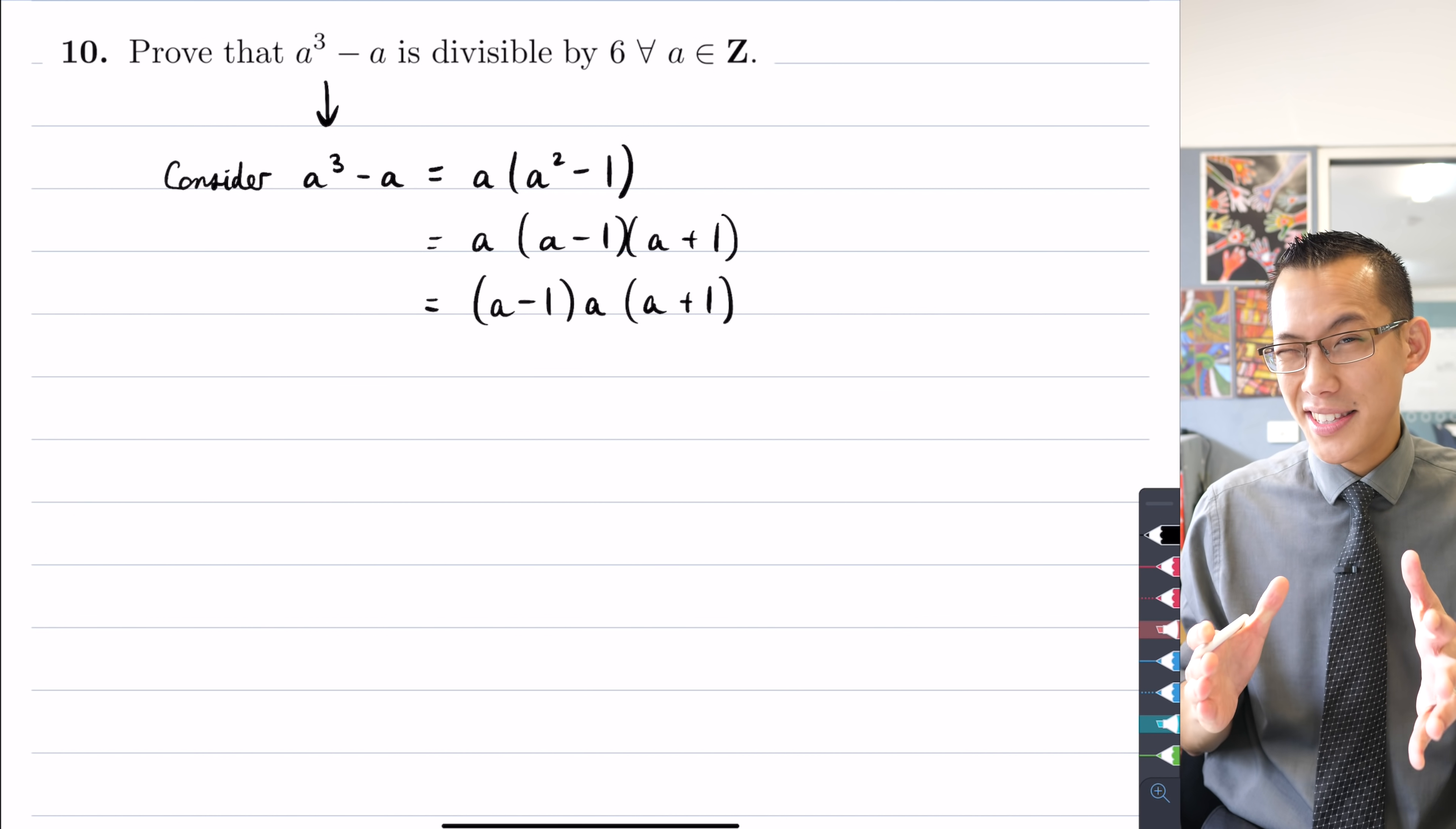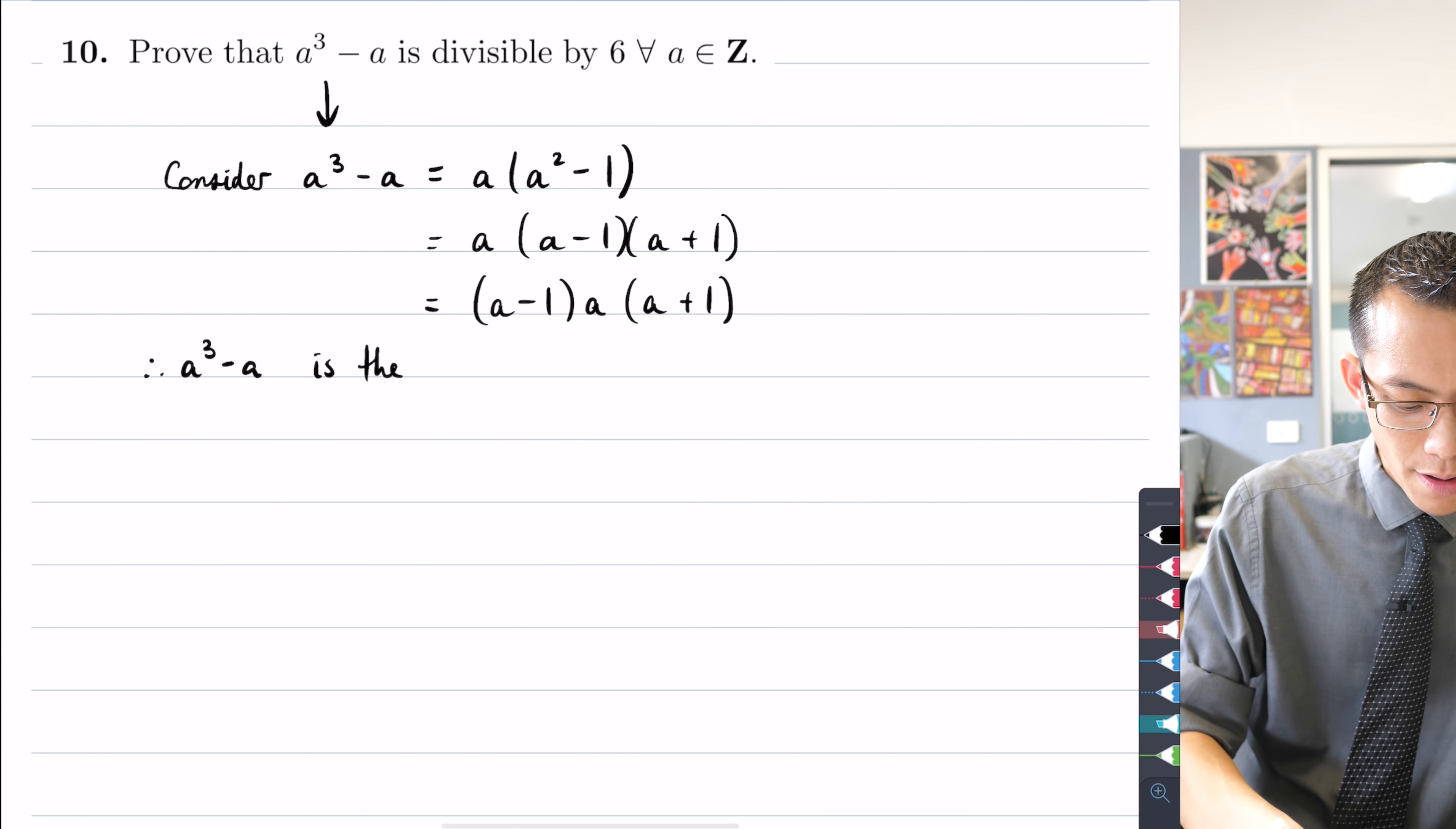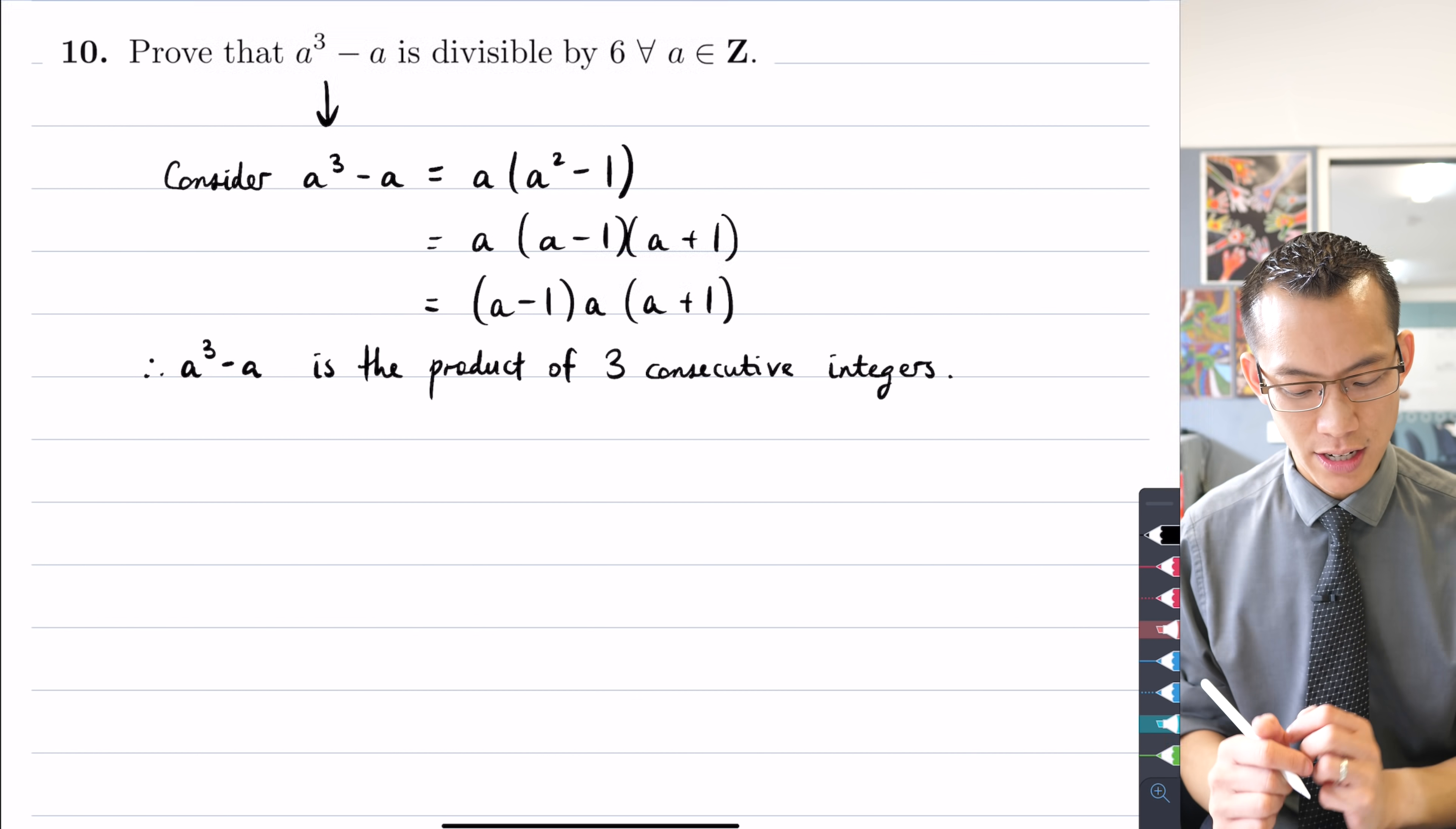What I want you to notice is that what you have is a product of three different numbers, but they're not just three random numbers. These numbers a and a - 1 and a + 1, they're actually connected, they're related in that if I put them in this order, a - 1 and then a and then a + 1, what you can see here is I actually have three consecutive integers. You've got one number here in the middle, a number one less and a number one more, so I've got three integers in a row here. Now this is important, it's so important that I'm going to write it down: therefore a³ - a is the product of three consecutive integers.